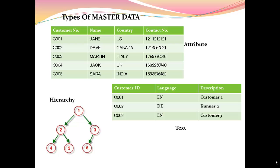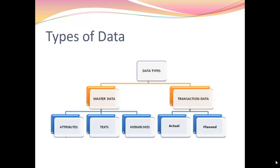These are the three types of master data. Actual type of transaction data holds the data which has occurred in real time, whereas a plan type of data is used for planning purpose.